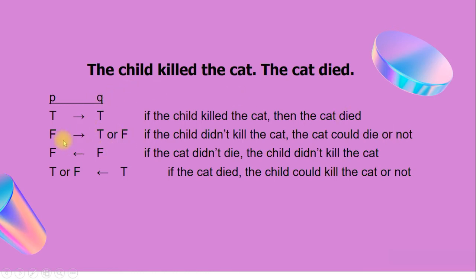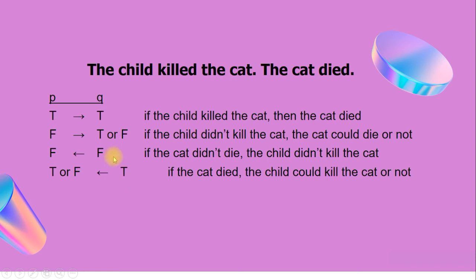Continuing the entailment analysis: if q is false — if the cat didn't die — then p must also be false, meaning the child didn't kill the cat. But if q is true — if the cat died — then p can be true or false, because the child killing the cat is not the only reason the cat could have died. So the cat's death might or might not have been caused by the child.